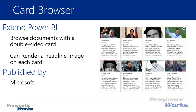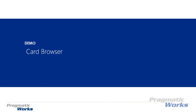This is really a way to browse documents, so if you have a lot of documentation or document data that you want to display, you can do that with the card browser and it makes it a nice easy way to navigate through that data. It allows you to render a headline image up at the top, viewable on this double-sided card, so you can flip the card to the other side and see more detailed data with the headline image on the other side as well. This visual is developed by Microsoft.